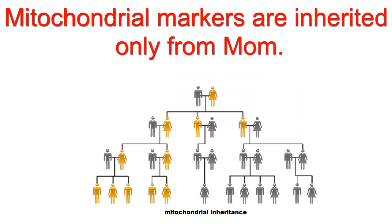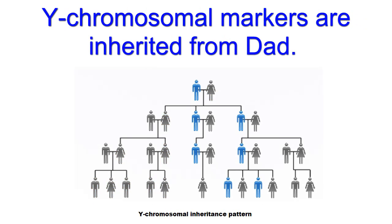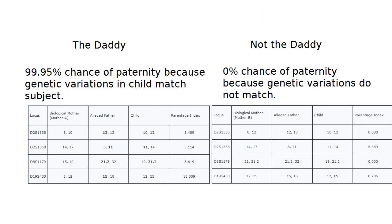In general, the child's markers should be an overlay of half of the mother's and half of the father's markers. There are some interesting exceptions, but they're not relevant here. The lab receives the samples and tests them for the presence of the markers. Then an algorithm calculates a probability of a match based on the shared markers of mother and father.